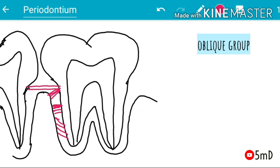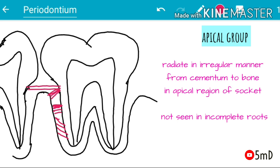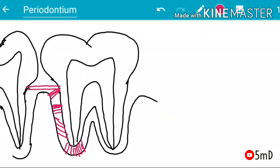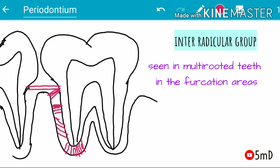The fifth group is the apical group of fibers. They spread out in an irregular manner from the cementum to the bone in the apical region of the socket, and are usually seen in completely developed, mature tooth roots. The final group is the interradicular group of fibers, which are seen in multi-rooted teeth between the two roots.